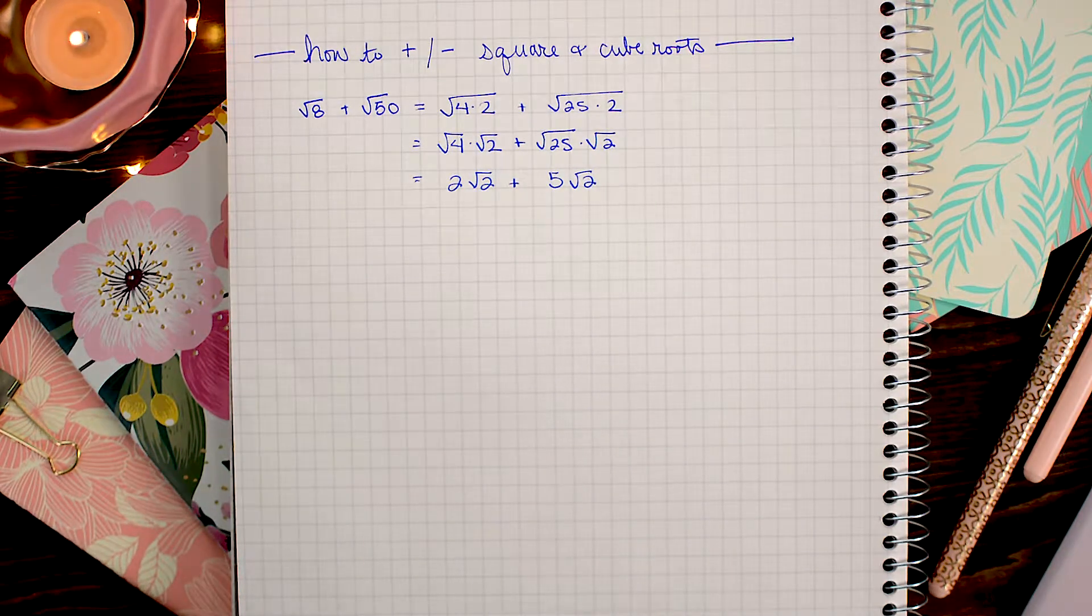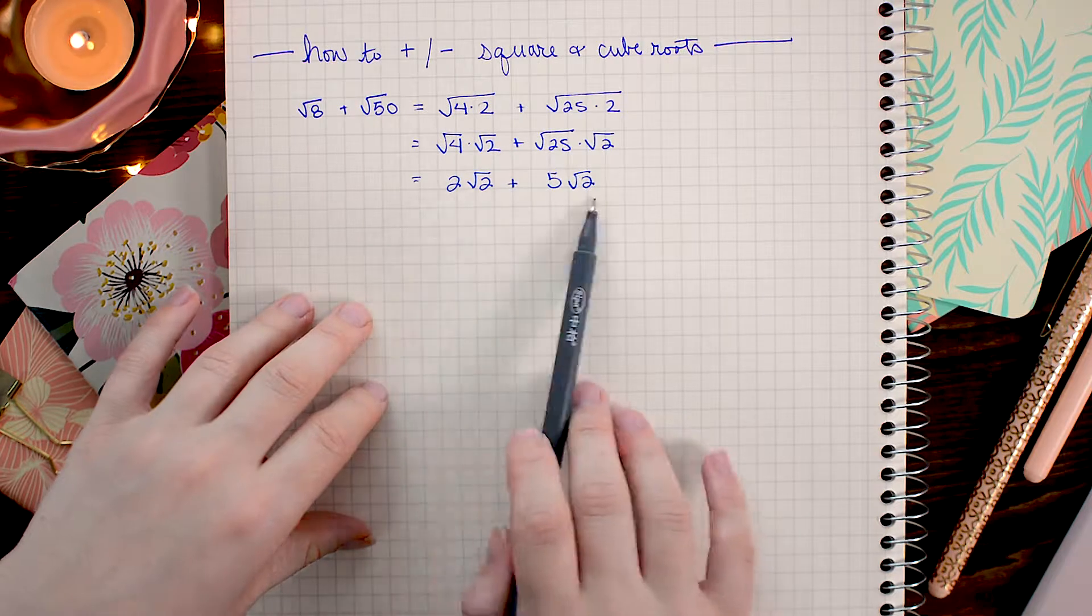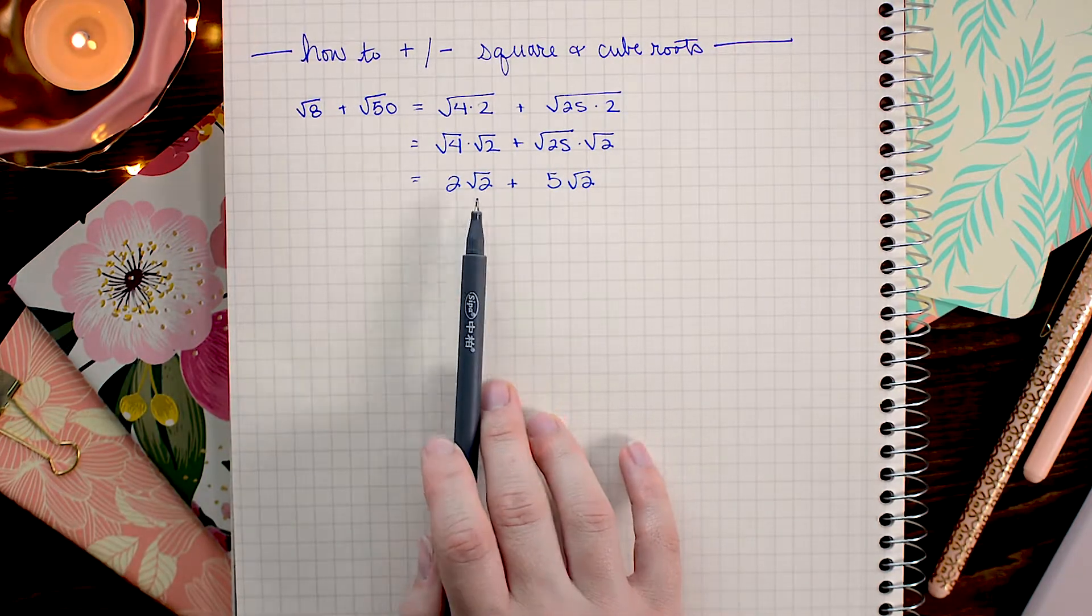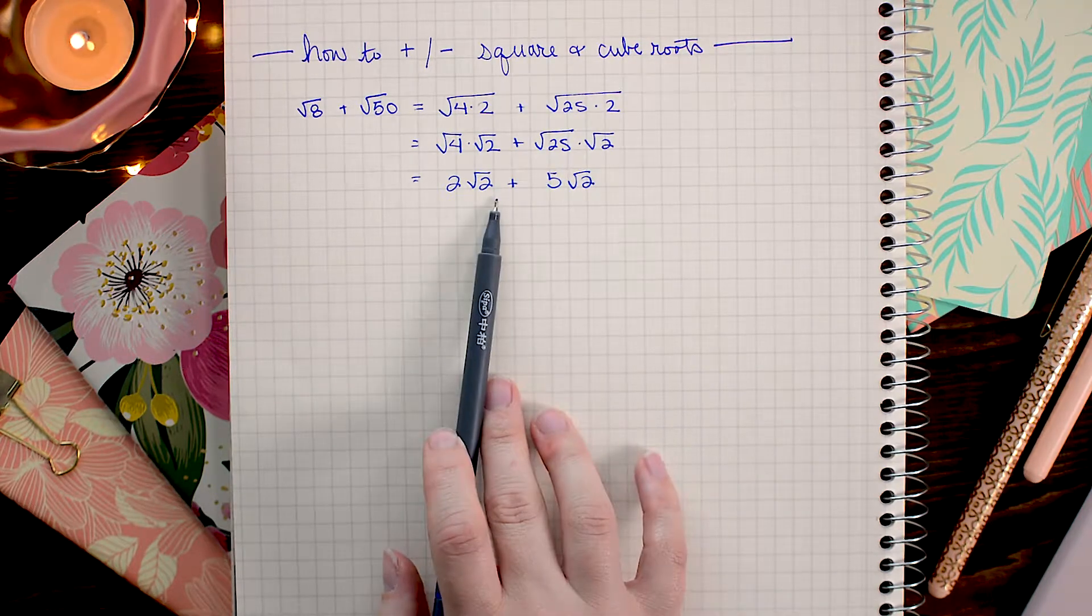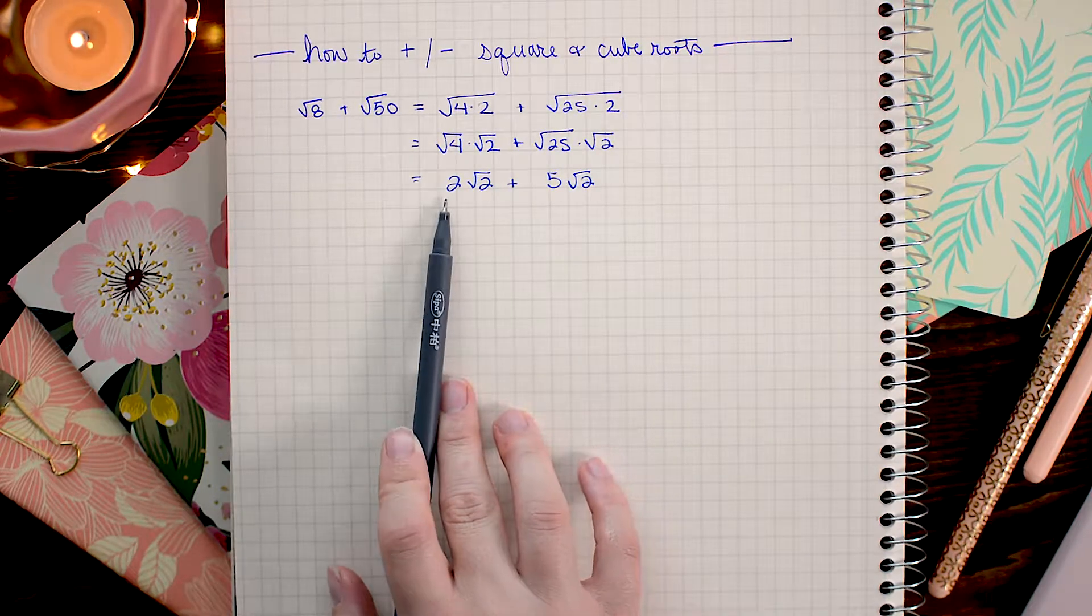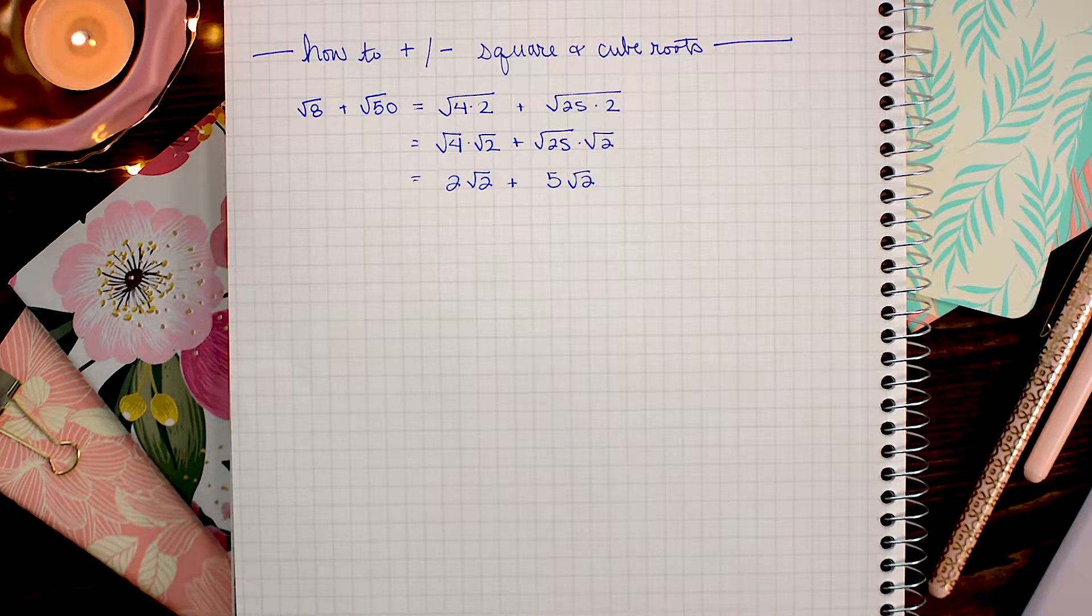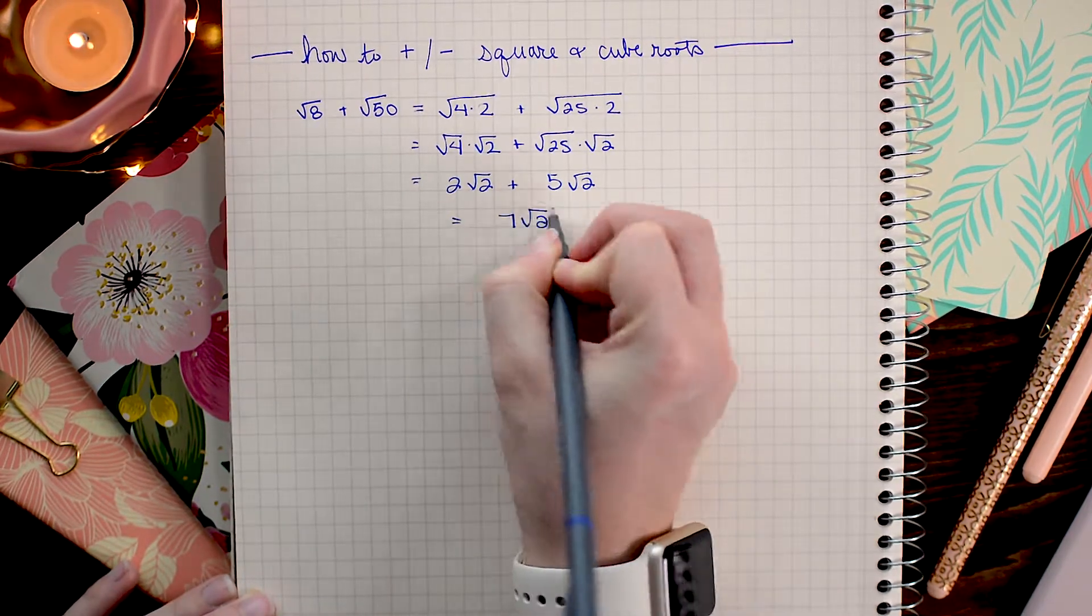So conveniently this worked out so that we have in both of these terms we have roots of 2, square roots of 2. So I can go ahead and combine these. Now when I have 2 square root 2's plus 5 square root 2's that will make 7 square root 2's.